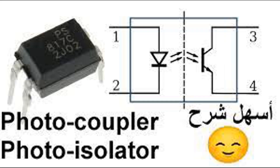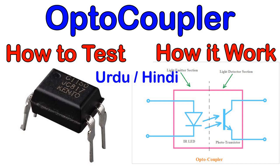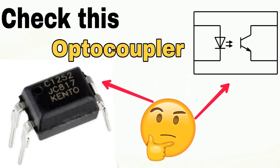The input terminals of the optocoupler are connected to the LED. Depending on the specific optocoupler model, there may be two or more input terminals, including an anode (positive) and a cathode (negative) connection for the LED. The electrical signal you want to transmit or isolate is applied to these input terminals and may come from an external circuit in the form of a voltage or current.